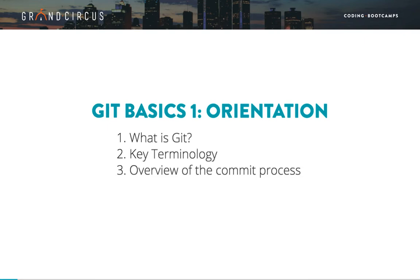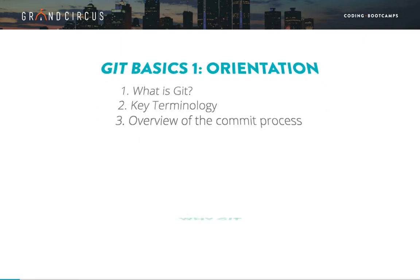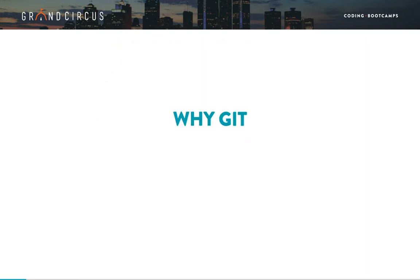Let's kick things off by tackling the most important question: what's the point of Git? Why are we learning it? As developers, we use Git for almost all of our projects for two reasons. First, it lets us save snapshots of a project over time as we code, so we can go back and undo if we mess something up.